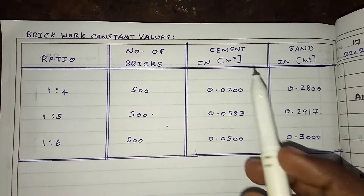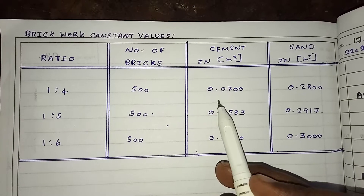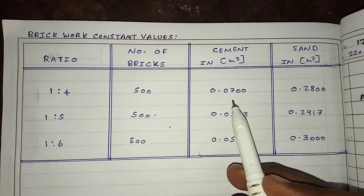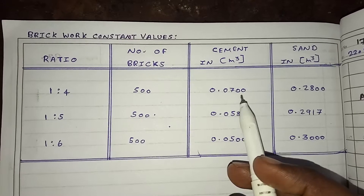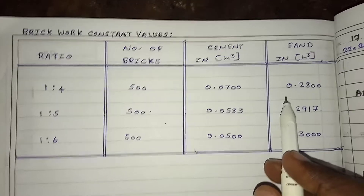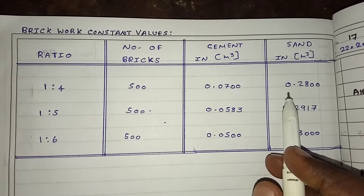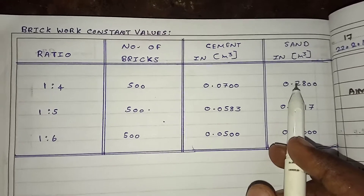For the 1 is to 4 ratio, the cement is 0.07 meter cube per 1 meter cube of brickwork, and sand is 0.28 meter cube per 1 meter cube of brickwork.